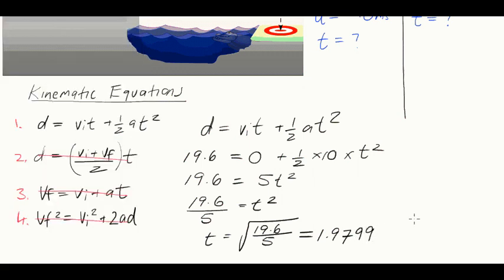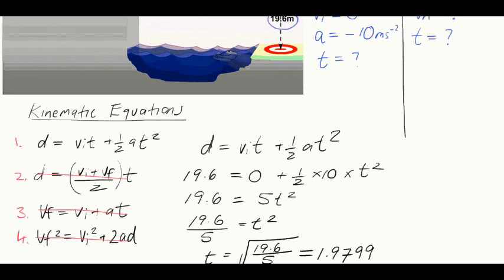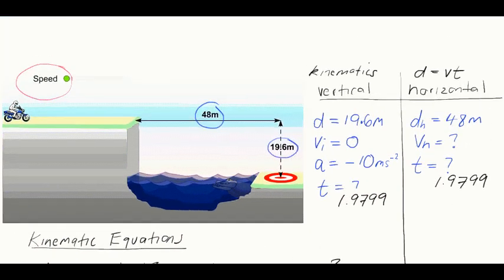Because the times are the same for both the horizontal and the vertical, that means that this time here, 1.9799, is the same as this time here, 1.9799. This now becomes quite simple. Because we've now got two out of the three things we need.